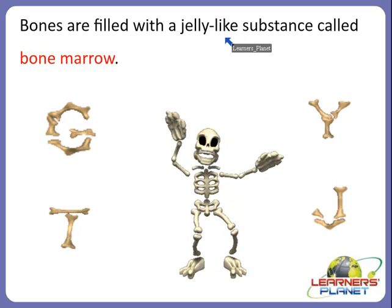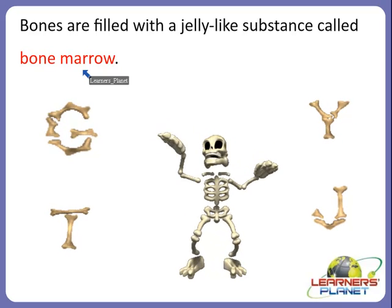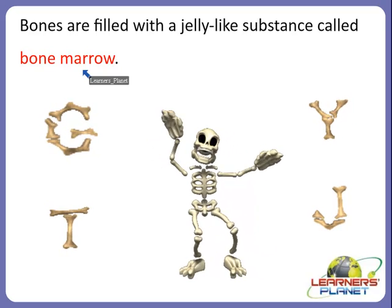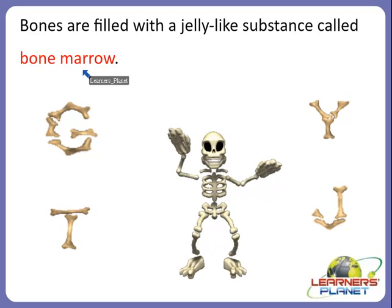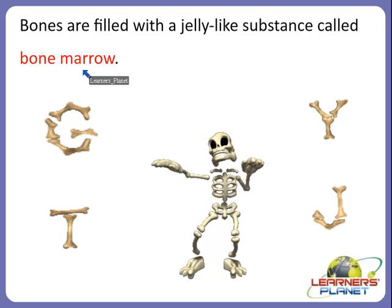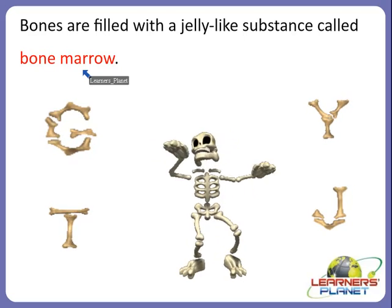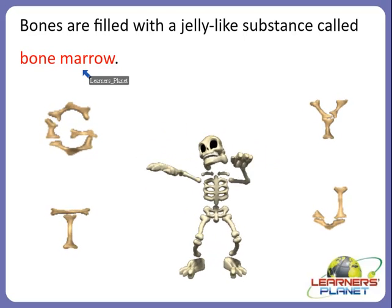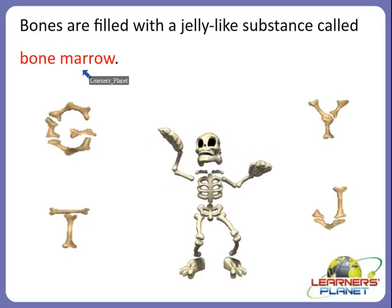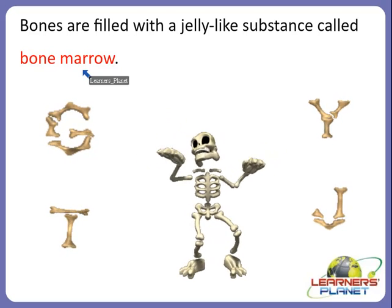How do bones grow in our body? When you were a baby, you had tiny hands, tiny feet, and tiny everything. Slowly, as you grew older, everything became bigger including your bones. A baby's body has about 300 bones at birth, and when we become an adult, there are 206 bones, because these bones grow together, fuse with each other, and decrease in number from 300 to 206.